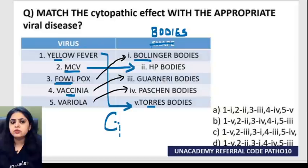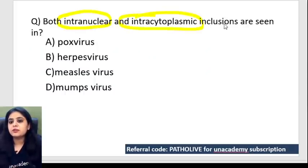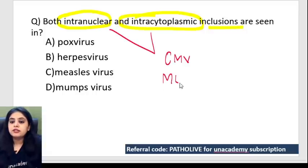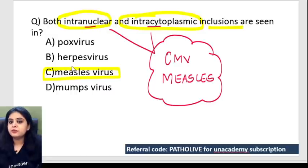Next question: both intranuclear and intracytoplasmic bodies are seen in which organism — pox virus, herpes virus, measles, or mumps? Remember, both intranuclear and intracytoplasmic are seen in two conditions: number one is CMV, and number two is measles. The option available here is measles, so that's the answer we mark.